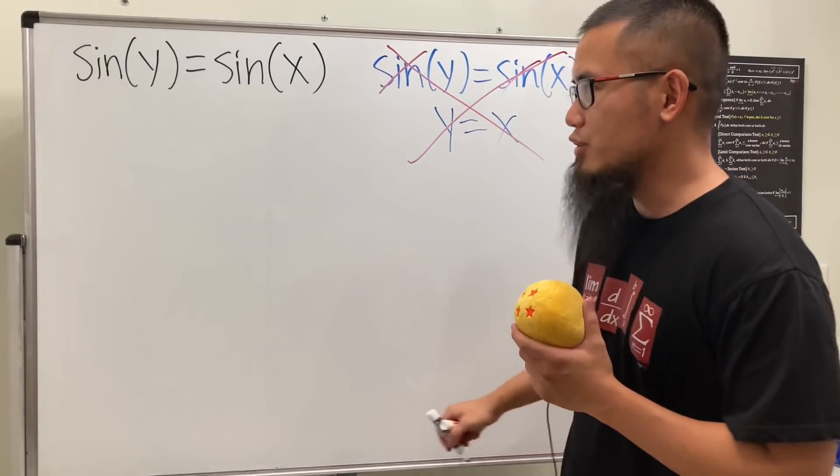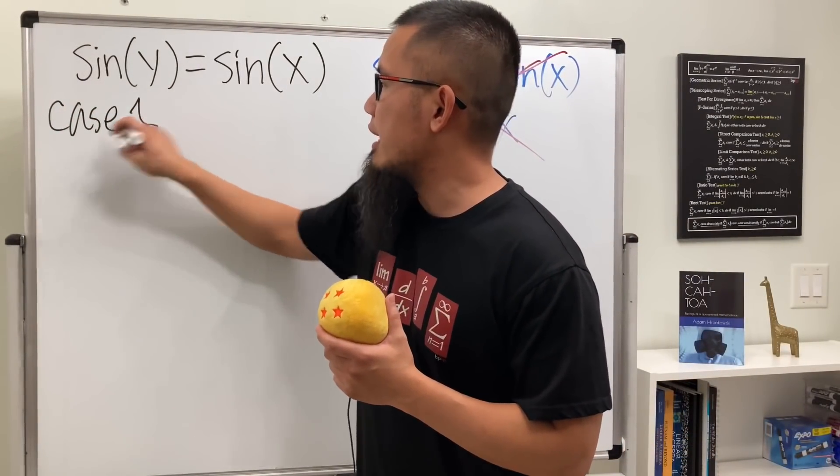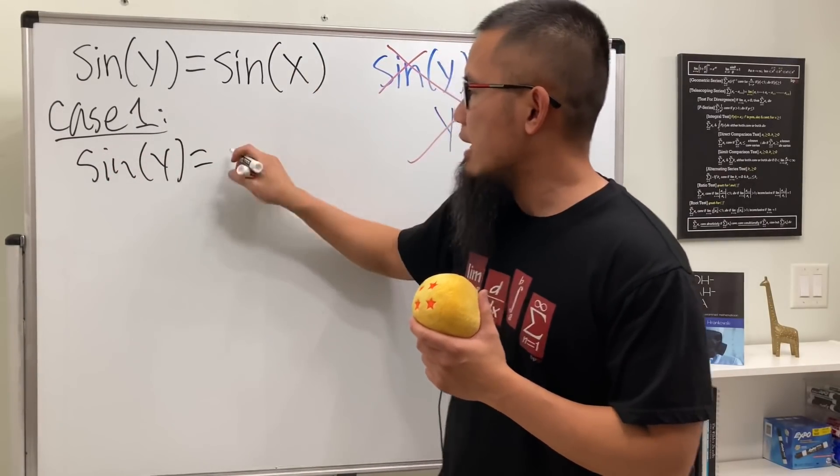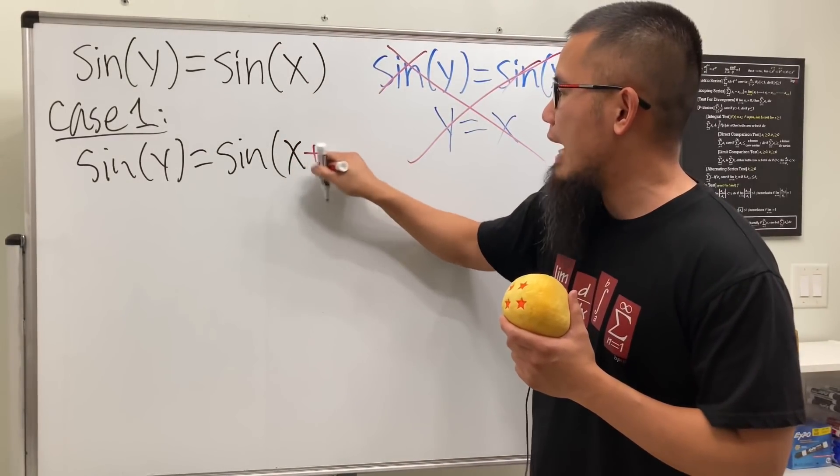We cannot just cancel the function. Here's the real deal - we actually have to consider cases. Here's Case 1: Look at sin(y) as sin(y), no problem. But sin(x) - remember sine is a periodic function, so we look at x but we have to add 2nπ. We have to consider all the possibilities.